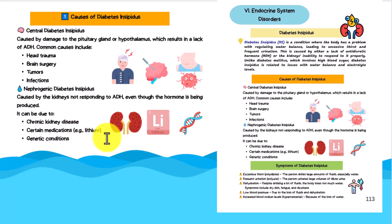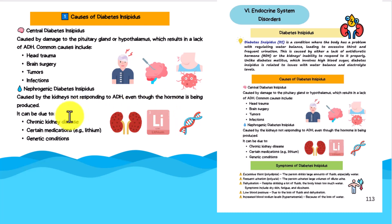Some of the causes of diabetes insipidus: central diabetes insipidus is caused by damage to the pituitary gland or the hypothalamus, which results in a lack of ADH. Common causes include head trauma, brain surgery, tumors, and infections. If you remember our bow tie earlier this week, the client had a motor vehicle accident three months prior — that was the head trauma clue in the case study. Nephrogenic diabetes insipidus is caused by kidneys not responding to ADH even though the hormone is being produced. This can be due to chronic kidney disease, certain medications like lithium, and genetic conditions.